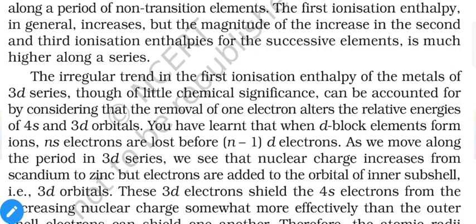The irregular trend in first ionization enthalpy of the 3d series metals can be accounted for by considering that the removal of one electron alters the relative energies of the 4s and 3d orbitals. When d-block elements form ions, ns electrons are lost before (n−1)d electrons — meaning electrons are first added to 4s orbitals, and the last electrons enter the 3d orbitals.